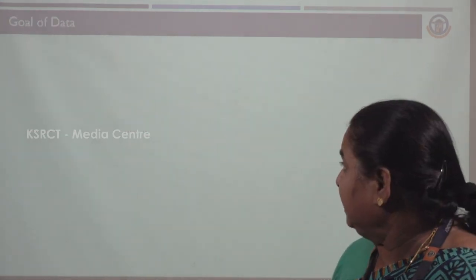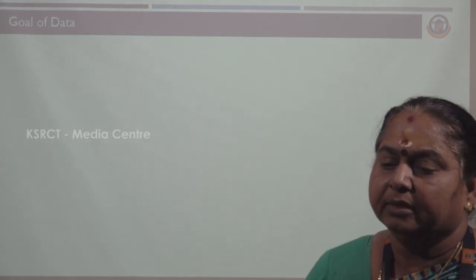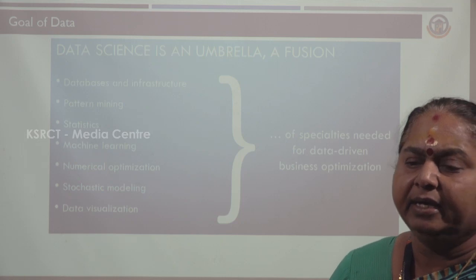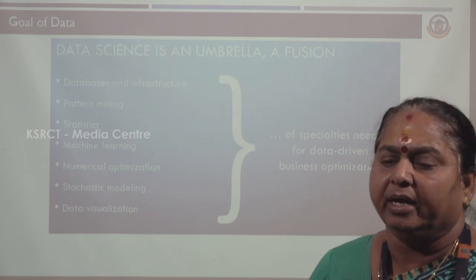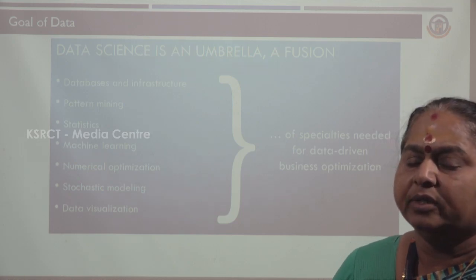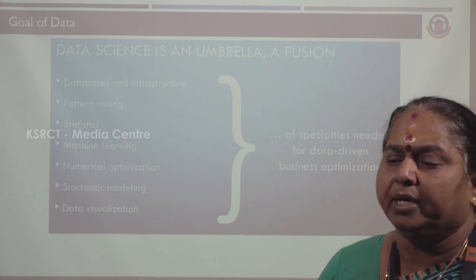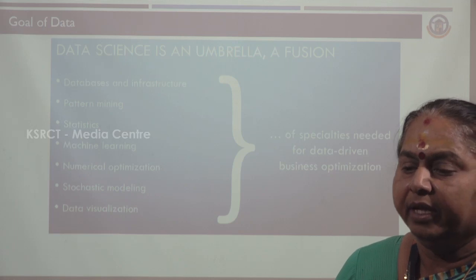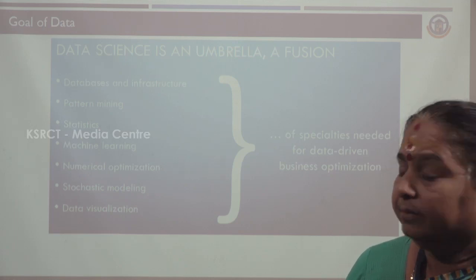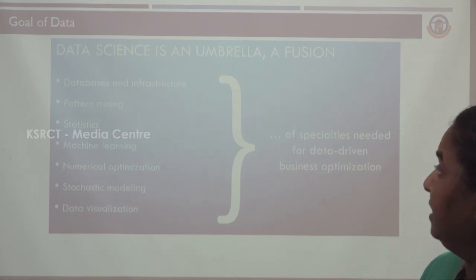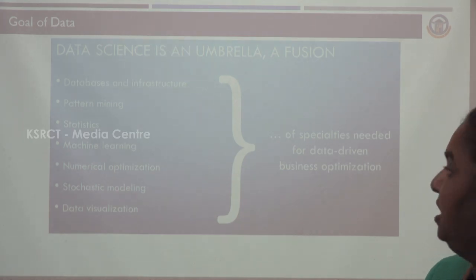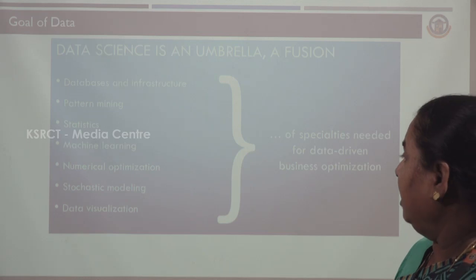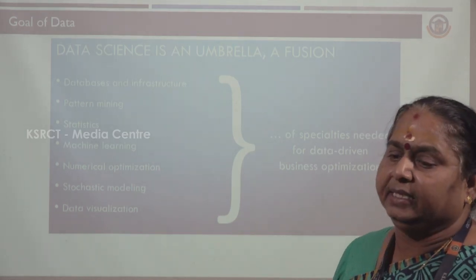Representing the data is used for the industry. The goal of data science is that it is an umbrella and also a fusion. This needs some specialties: databases and information, future pattern mining, statistics, machine learning, numerical optimization, stochastic modeling, and also data visualization. These are the specialties.